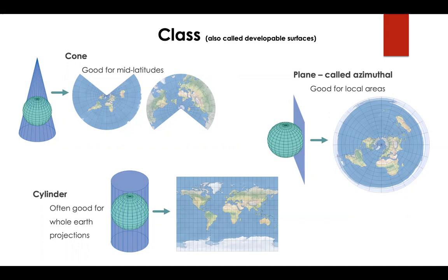A cone will look like this when you show it on a map. A planar projection is really good for local areas and looks like this. And a cylinder is often good for whole earth projections and will give you a rectangular shaped map.